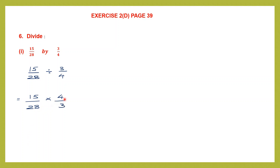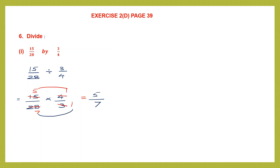Now we have 15 by 28 into 4 by 3. We cancel where we can: 3 and 15 are both divisible by 3, giving 1 and 5; and 4 and 28 are both divisible by 4, giving 1 and 7. Multiplying numerators: 5 into 1 is 5; denominators: 7 into 1 is 7. Final answer is 5 by 7.